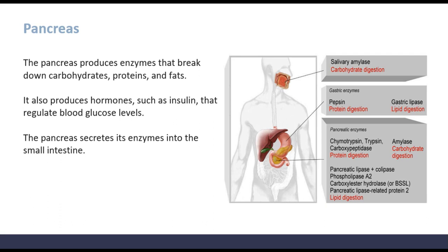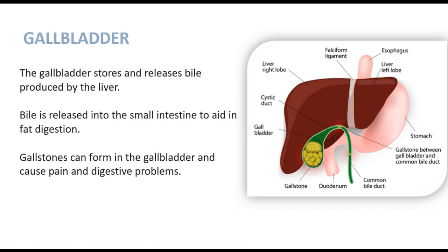The pancreas produces enzymes that break down carbohydrates, proteins, and fats. It also produces hormones such as insulin that regulate blood sugar levels. The pancreas secretes enzymes into the small intestine. The gallbladder stores and releases the bile produced by the liver. Bile is released into the small intestine to aid in fat digestion. Gallstones can form in the gallbladder and cause pain and digestive problems.